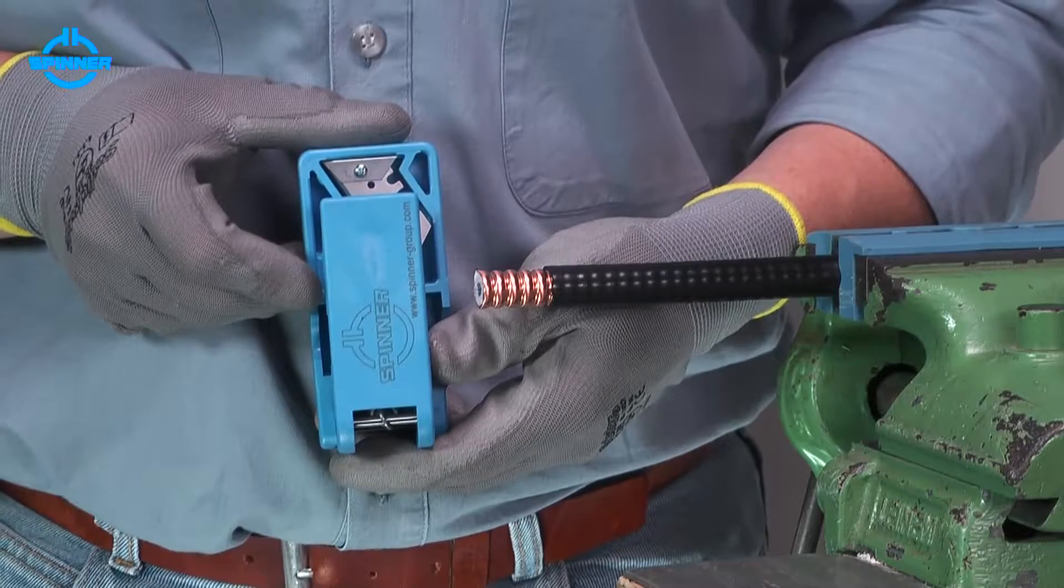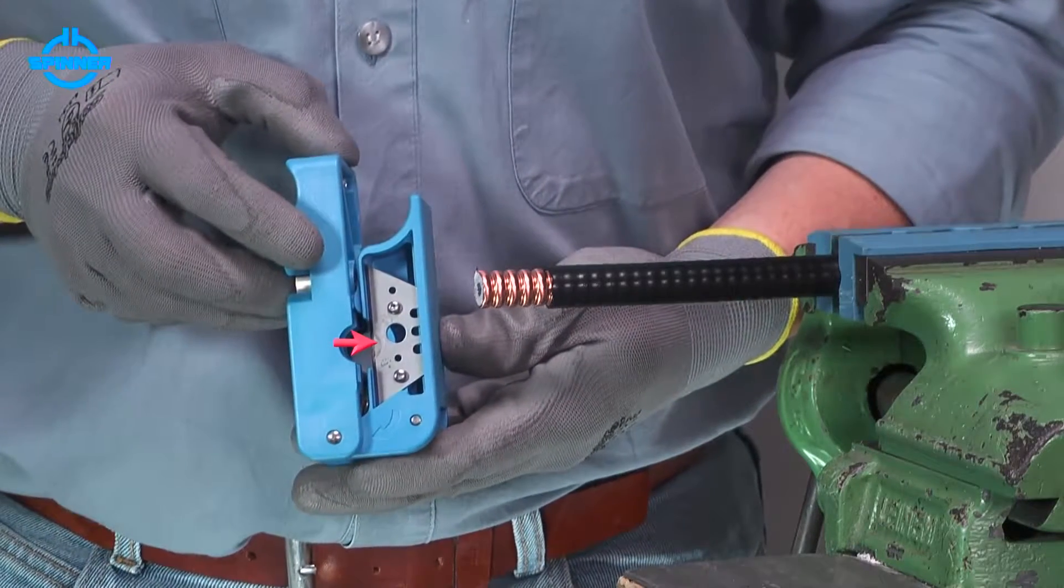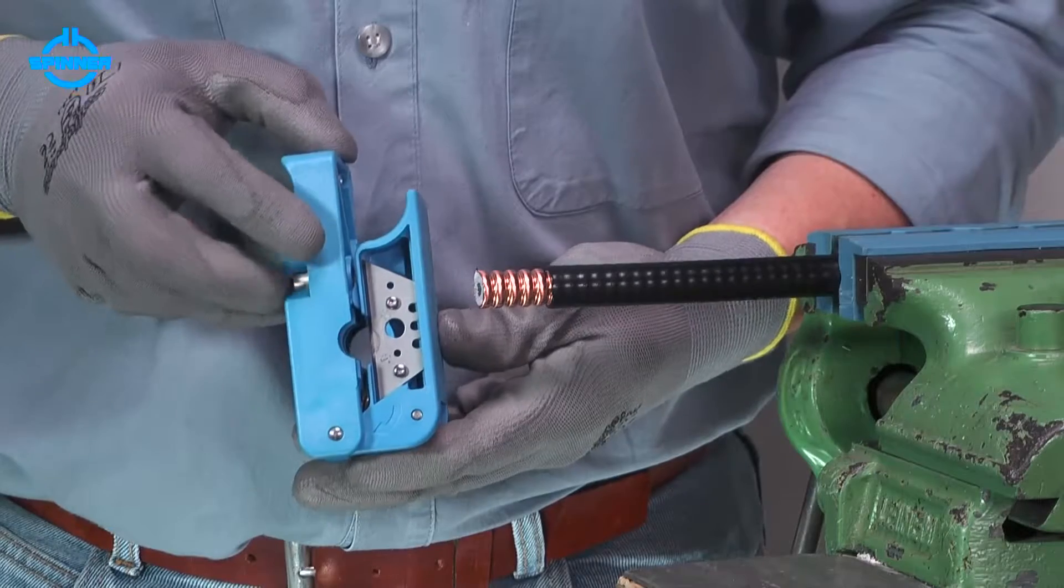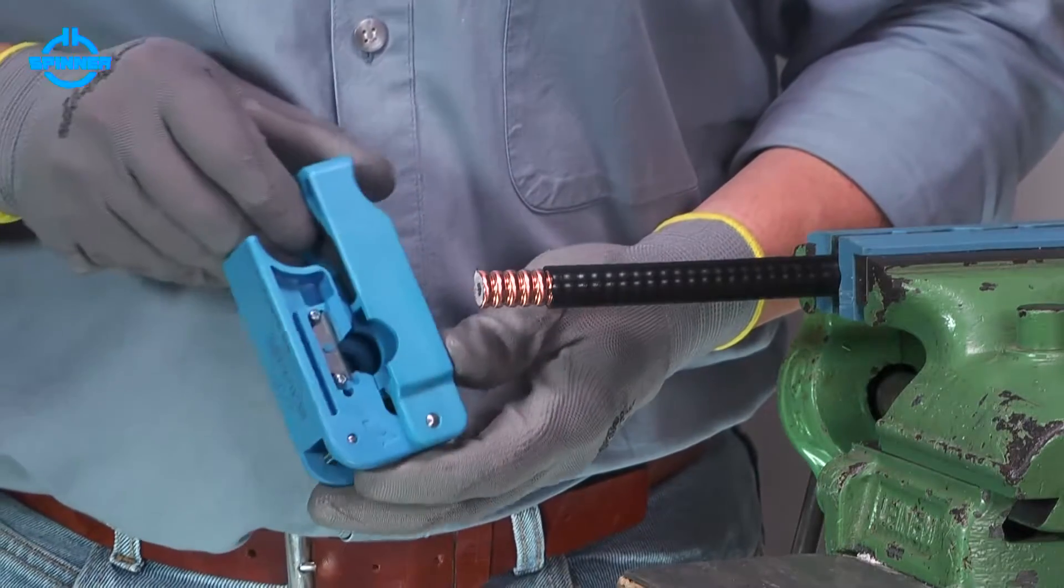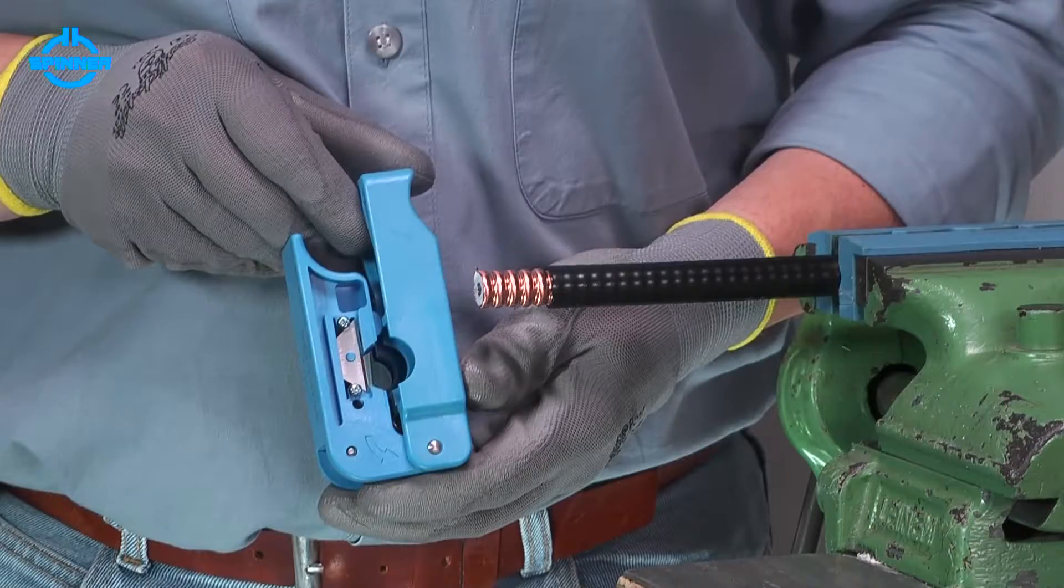The trimming tool houses two blades: the main one to cut cable layers, and the smaller one to slit the cable jacket only.